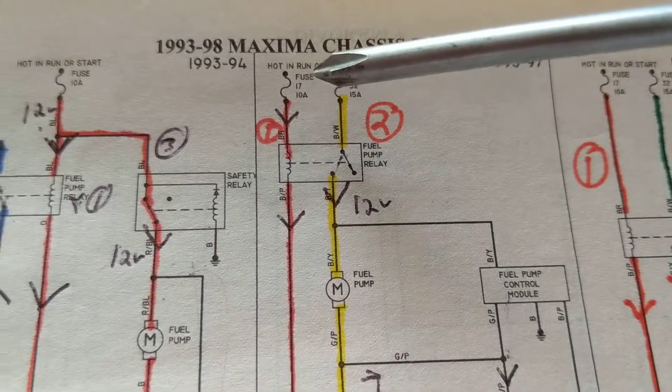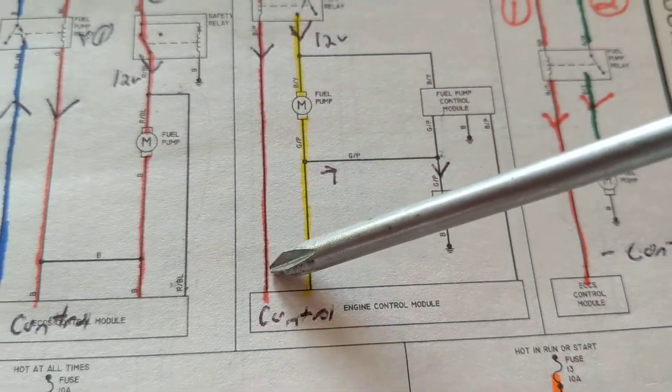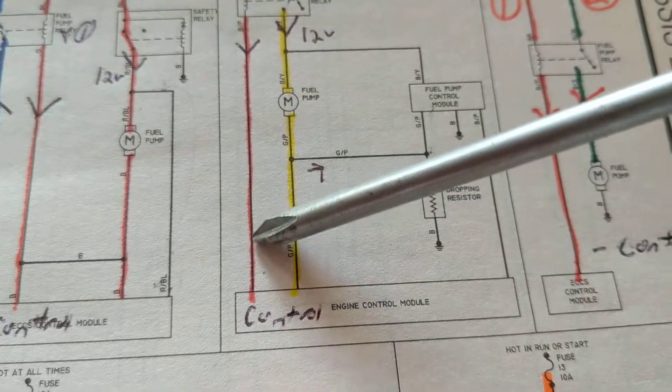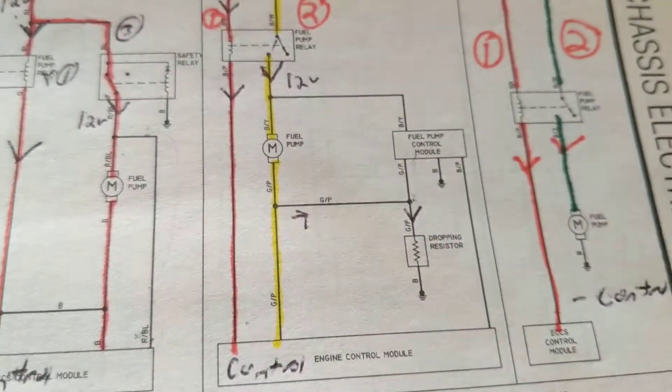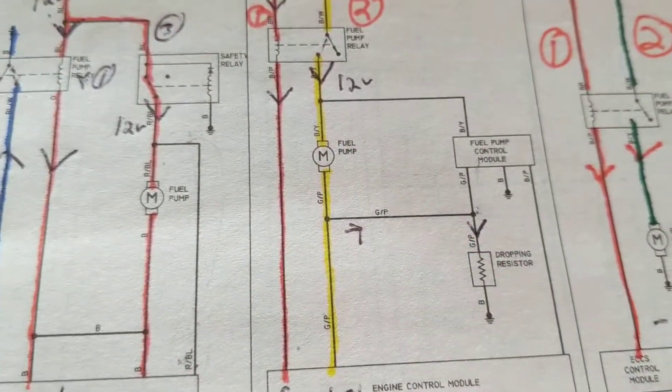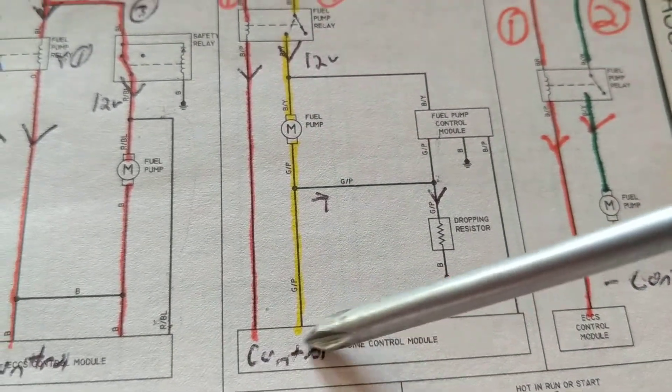This is number one that has to happen. Current will flow through the coil to magnetize it. Again, no ground. Nissan Maximas, seems that they have no direct ground, but they go through the modules to the computer, which also not many cars do. So once we get a ground, probably this will give us a ground.